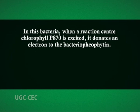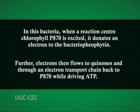In these bacteria, when a reaction center chlorophyll — P870 — is excited, it donates an electron to bacteriopheophytin. Electrons then flow to a quinone through an electron transport chain and back to P870, driving ATP synthesis. These bacteria synthesize NADH in three ways: when growing in the presence of hydrogen gas, hydrogen can be used directly in the production of NADH. Many purple photosynthetic bacteria use ATP or the proton motive force to reverse the electron flow and move electrons from inorganic or organic donors to NAD. Green sulfur bacteria carry out a simple form of non-cyclic photosynthetic electron flow to reduce NAD.